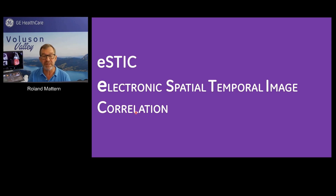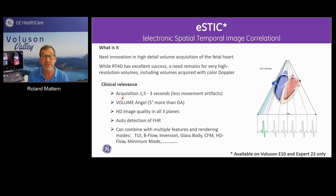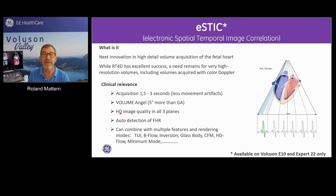The next part is E-STIC. The basis is the same as STIC - volume acquisition with rearrangement of images. But the advantages are: a very fast acquisition time between 1.5 and 3 seconds, less movement artifacts, and automatic detection of the fetal heart rate. The volume angle is still 5 degrees more than the gestational age, and the result is high-definition images in all three planes. It can also be combined with all other modes like 2D flow, inversion, minimum mode, and so on.